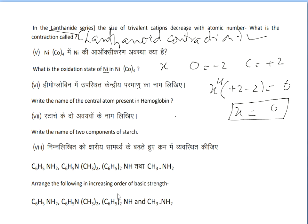Write the name of the central atom present in hemoglobin. The central atom will be iron from the heme group. Iron will be there with a complex of 4 nitrogen atoms.